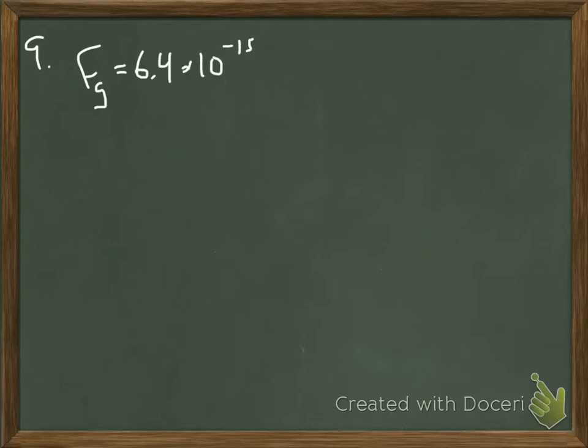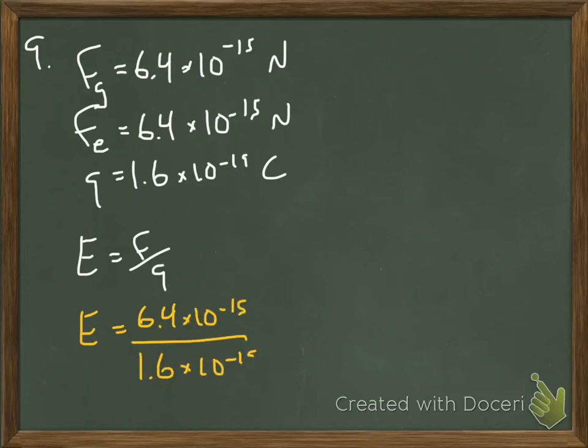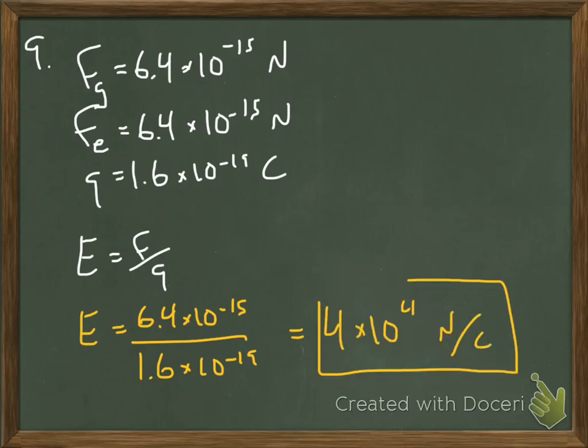Similarly, here it says an oil drop carries one excess electron. So we can assume that the charge of that oil drop will just be the charge of one electron, 1.6 times 10 to the negative 19th coulombs. So we can plug that into our formula and solve for the electric field strength. I hope that this was helpful.